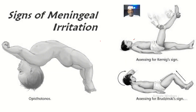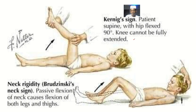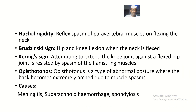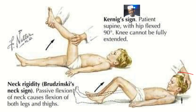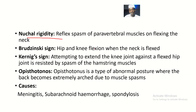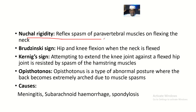We have about four main meningeal signs, with pictures illustrating each one. First is nuchal rigidity. The patient is lying down and you raise their head up. You are checking if there is reflex spasm of the paravertebral muscles on flexing the neck. These are the muscles on the sides of the vertebral column. If there is spasm, the person has nuchal rigidity — there's something internally stopping you from flexing the neck.